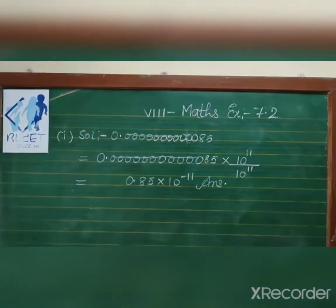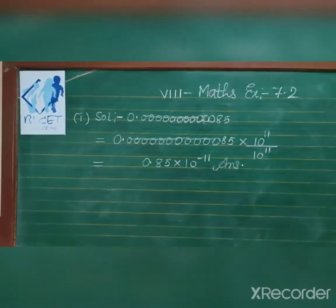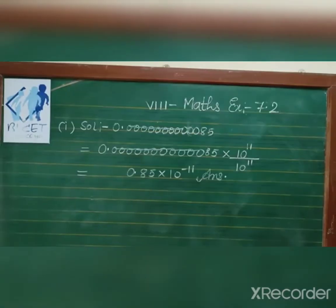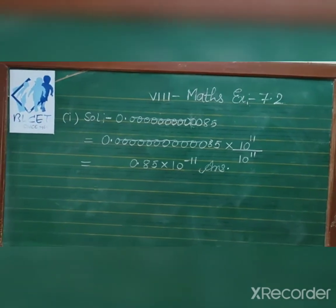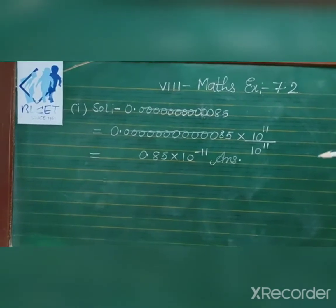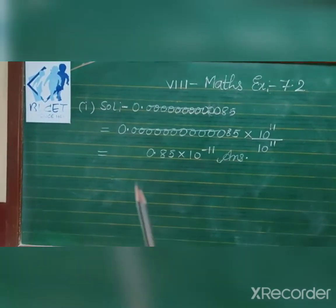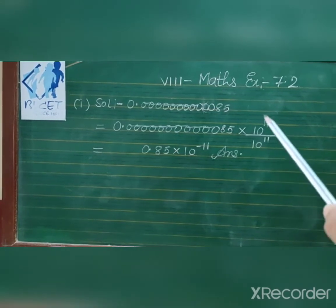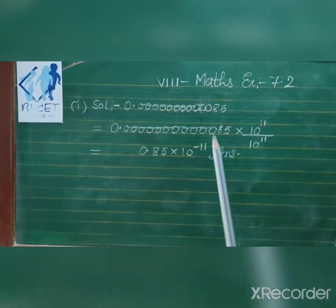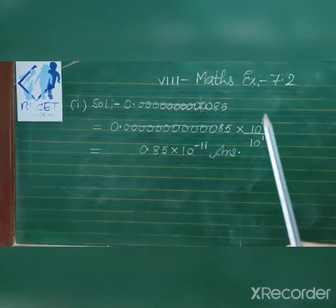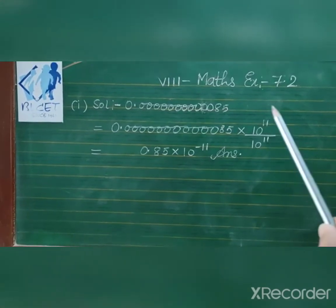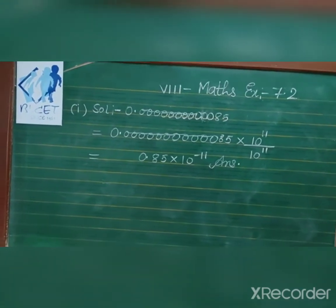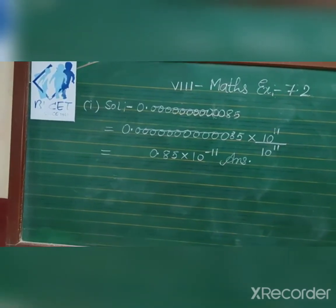In exercise 12.2, the number 0.1 followed by eleven zeros and then 85 — we multiply and divide by 10 to the power 11. The decimal moves to the right and 10 to the power 11 appears in the denominator. Using the formula: 1 upon x to the power m equals x to the power minus m.